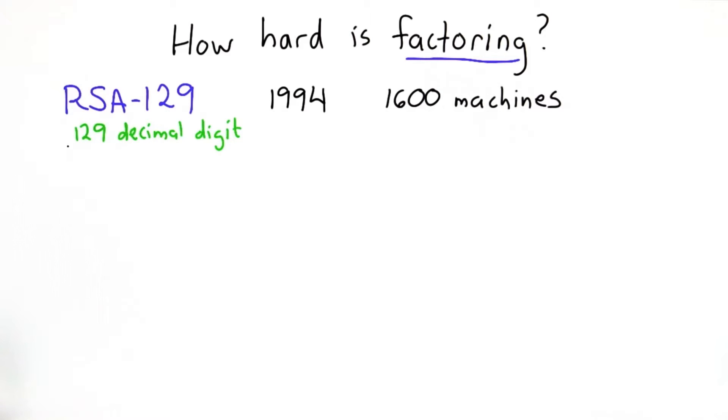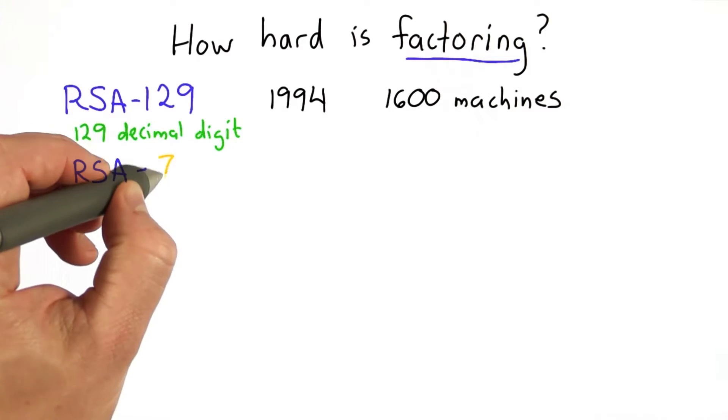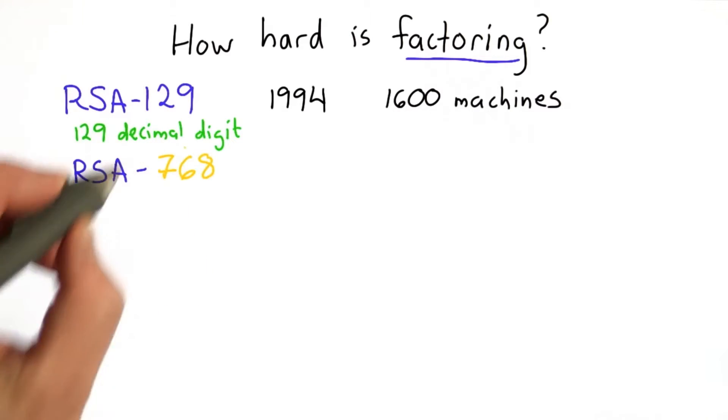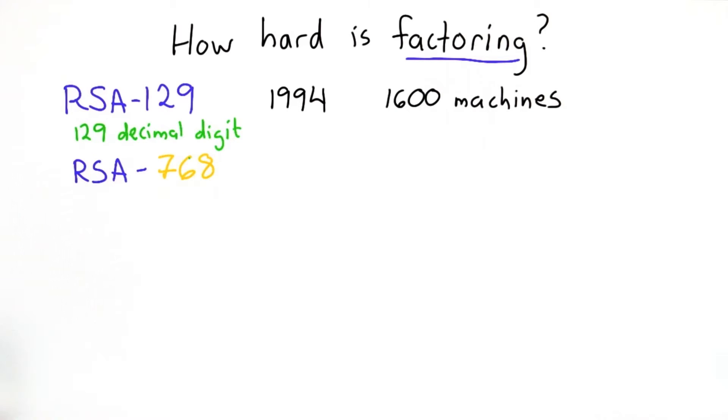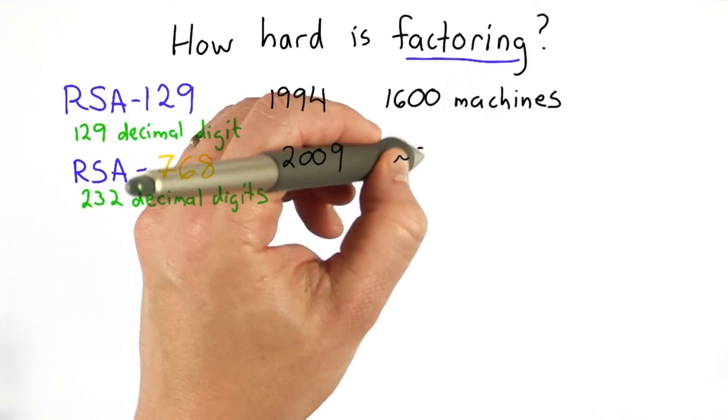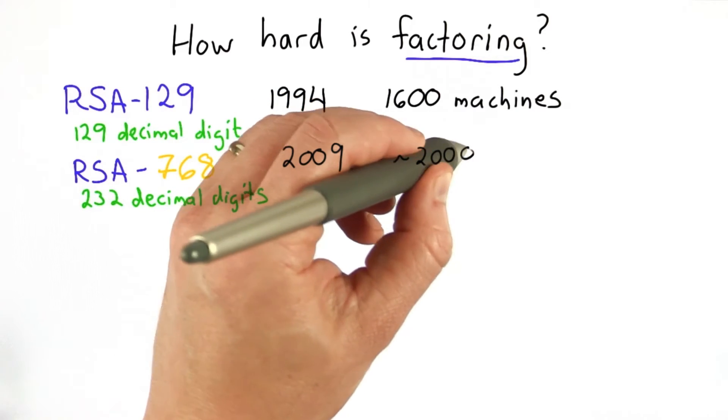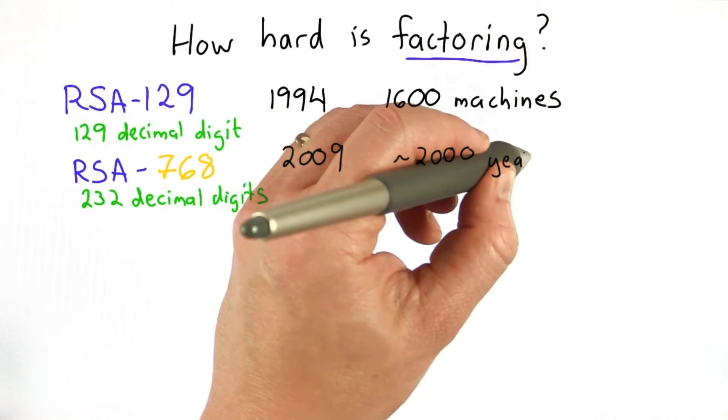There are larger numbers that have been broken since. The largest challenge that's been broken so far was RSA 768, which was a challenge, and those are bits instead of decimal digits, so that's equivalent to 232 decimal digits. That was done in 2009 using about 2,000 years of computational power.